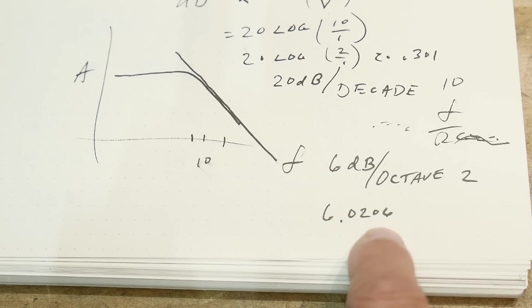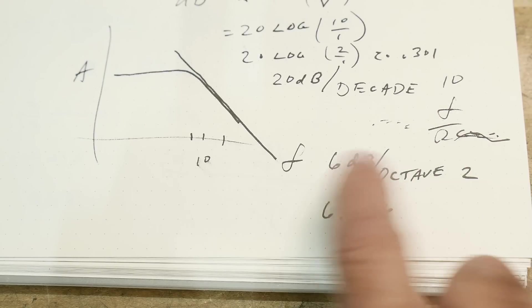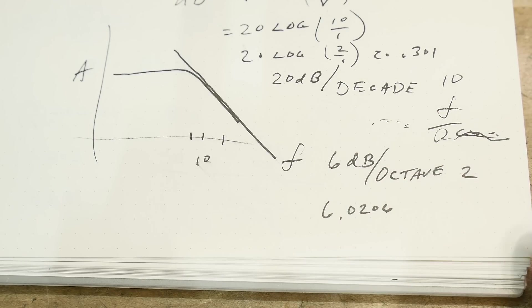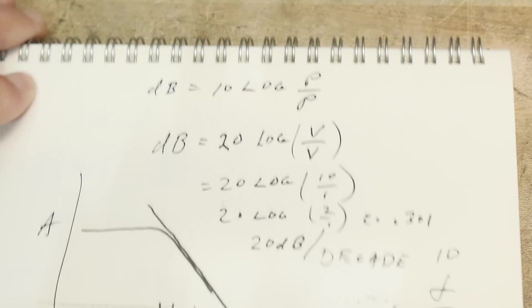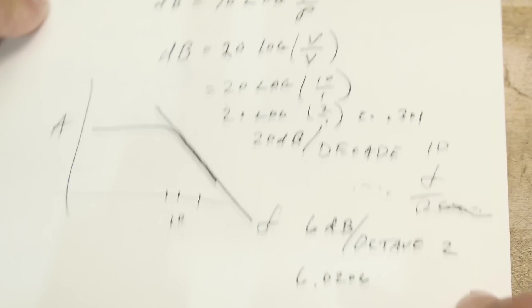So 6.0206 is the real number. 20 dB is perfectly accurate, but 6 is an estimation, 6 is a rounding thing. It's actually 6.0206, but they just call it 6 dB per octave. They say close enough.